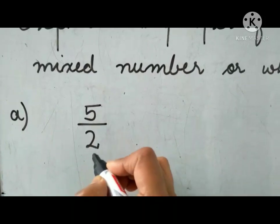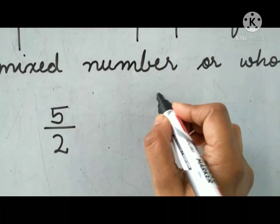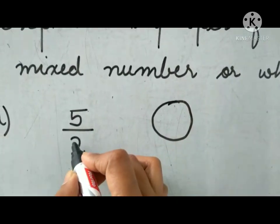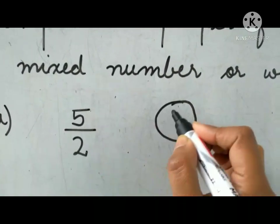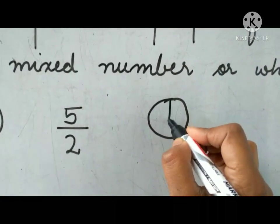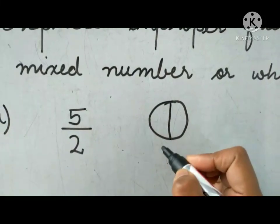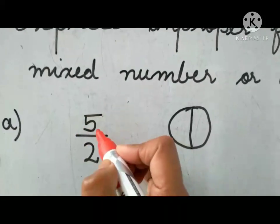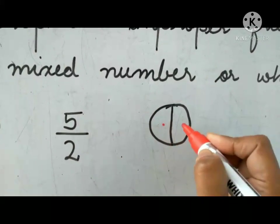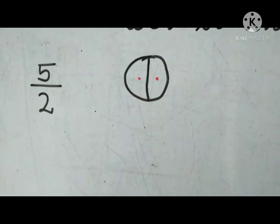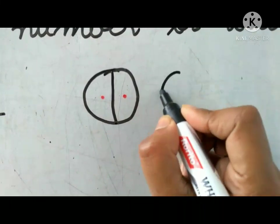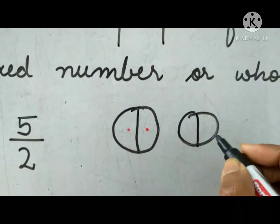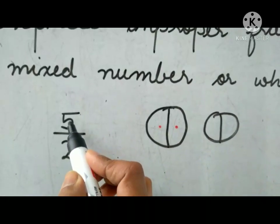What's the denominator? Two. So we'll draw a circle and divide the circle into two equal parts: one and two. Now you need to shade five parts. One, two — it's only two. So you need to draw one more circle and divide it again into two equal parts. We need to shade five total, so one more circle is needed.